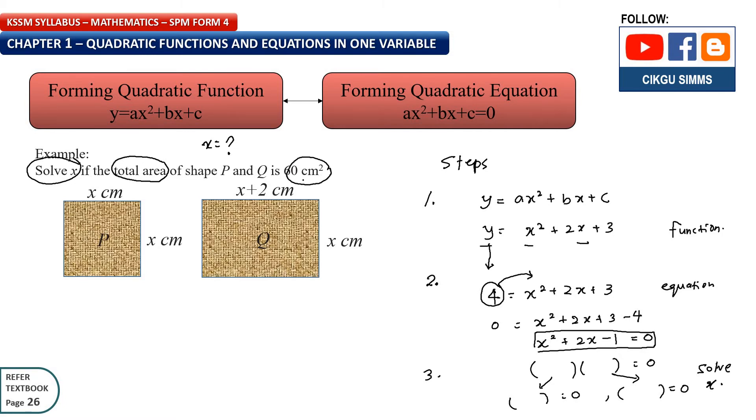So we find the total area is 60 cm squared. We can ignore the 60 cm squared first. We do first step first. First step is your form of function. The function is about total area.